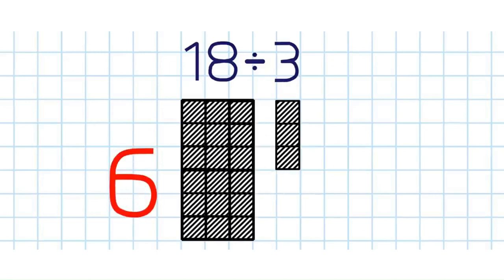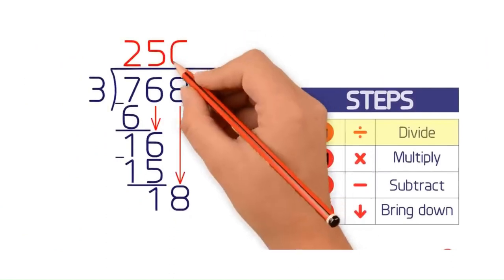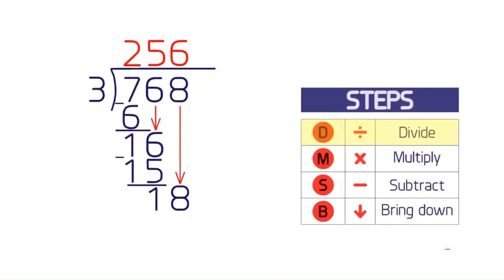The answer this time is 6. Write down 6 above the 8. Multiply 3 by 6, and place this below the 18. Now subtract 18 from 18 to get 0. Because you have no more numbers to bring down, you are finished, and the answer is 256.